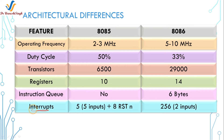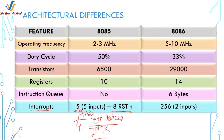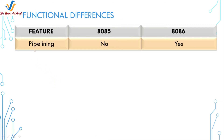The next feature is interrupts. There are 5 pins provided in the 8085 microprocessor to accept interrupt requests from external devices, and 8 RST instructions are defined to handle those interrupts. For more information on 8085 interrupts you can watch my dedicated video. In the 8086, there are 256 interrupts, but only 2 pins are provided to accept external device interrupt requests.